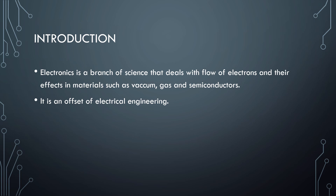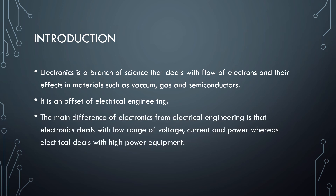Previously, electronics was under the branch of electrical engineering — there was no separate branch of electronics. After the tremendous advancement of electronics in the market, it became a separate branch. The major difference of electronics from electrical engineering is that electronics deals with low voltages and power, such as 1 volt, 1 millivolt, 5 volt, or 1 watt, 10 milliwatt, whereas electrical engineering deals with high voltages and power, such as 100 volt, 230 volt, or 1 kilowatt, 100 megawatts.